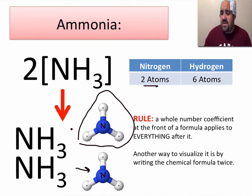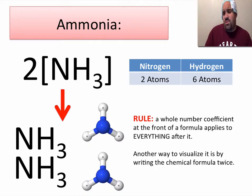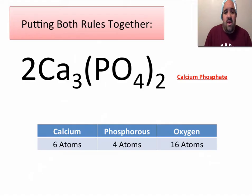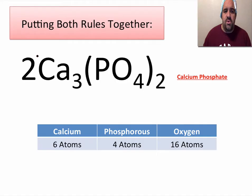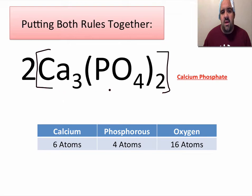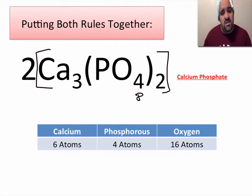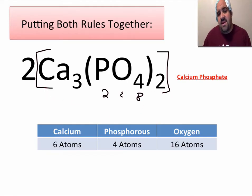This is how we read chemical formulas. We have two rules, and now we're going to get a little tricky and put those two rules together. We have calcium phosphate here. We know this leading two is going to apply to everything. There are three Ca's right here; this two is going to double them to six Ca's. This subscript two applies to the parentheses, meaning we have two of what's in the parentheses — eight oxygen and two phosphorus. But since we have two units total, two times two gives us four phosphorus and 16 oxygen.